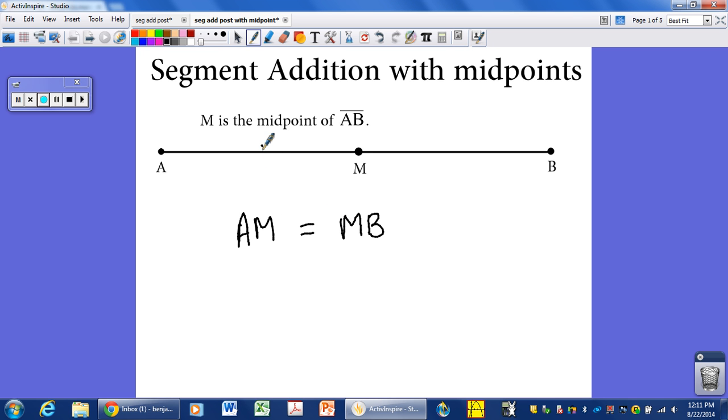Or we can mark it. If you want to mark it, you mark it with tick marks. So you put a single tick mark on the segments that happen to be the same length. So in this case, a little bit different notation, if M is the midpoint, that means that segment AM is congruent to segment MB. So this one says that the lengths are equal, and this one says the segments themselves are congruent.